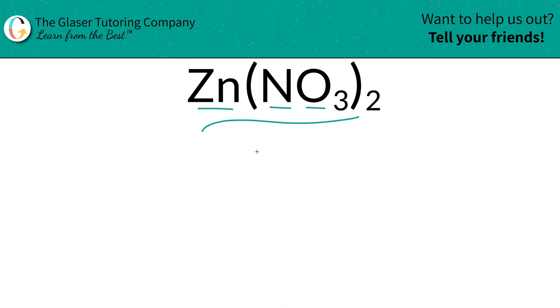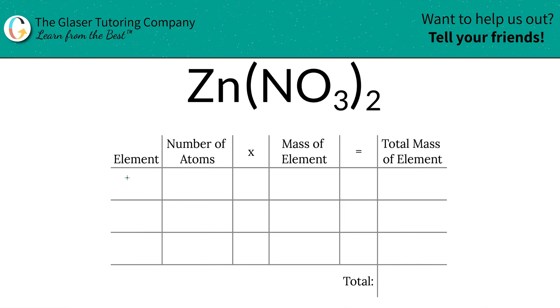Take a look at the following table. The first thing we're going to do is find the total mass. So I'm going to write down the elements of the compound. We've got zinc, nitrogen, and oxygen.